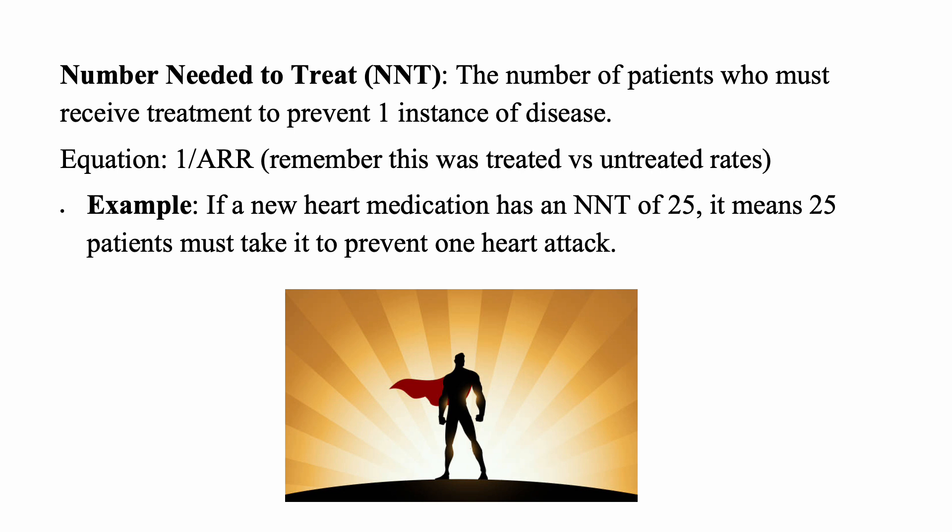Number needed to treat, or NNT, is the number of patients who must receive treatment to prevent one instance of disease or one adverse outcome. The equation is 1 over the absolute risk reduction — that's the difference in disease risk between treated and untreated groups. For example, if a new heart medication has an NNT of 25, you need to treat 25 patients to prevent one heart attack.